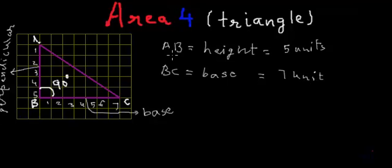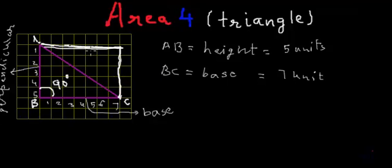Now, how to calculate the area of this triangle? This is a right angle triangle, and if I do a certain construction over the grid we can actually convert this triangle into a rectangle. So this is a rectangle, and let's name this new point as D. So ADCB is a rectangle.